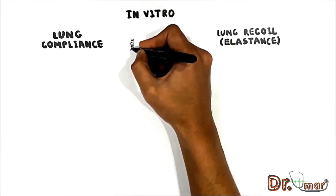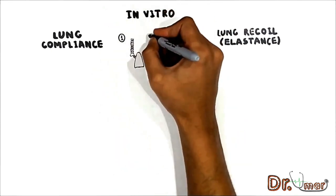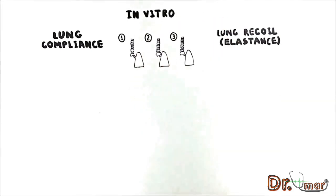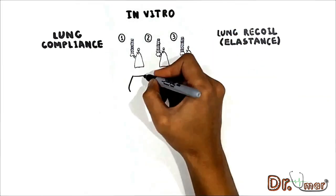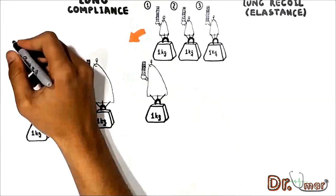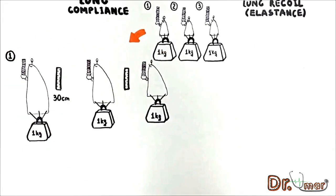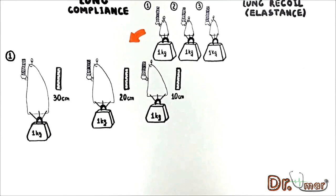In vitro, suppose I expose three lungs out of the chest cavity. First, you have to know that if you get the lung outside of the chest cavity, it collapses. So here are three collapsed lungs outside of the chest cavity. I fix the top end of all of them and do an experiment by attaching a one kilogram weight to each. Suppose the first lung stretches 30 centimeters, the second 20 centimeters, and the third only 10 centimeters. Why does this happen if we put one kilogram on each?